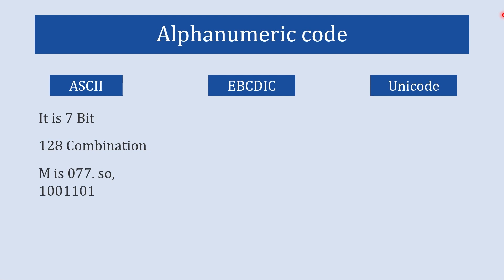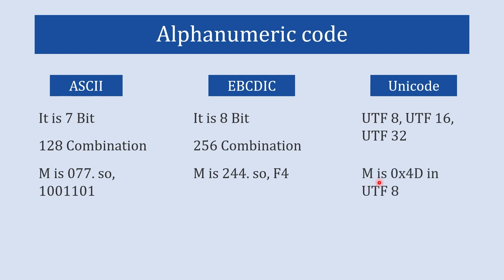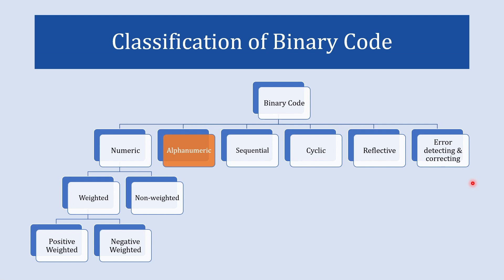The next code is EBCDIC — Extended Binary Coded Decimal Interchange Code — which is an 8-bit code and an advanced version of ASCII, allowing 256 combinations. Capital M in EBCDIC is represented as F4. The third alphanumeric code is Unicode, the latest method, which supports UTF-8, UTF-16, and UTF-32 — meaning 8-bit, 16-bit, and 32-bit encodings — allowing an enormous number of combinations. Capital M in Unicode UTF-8 is 0x4D.